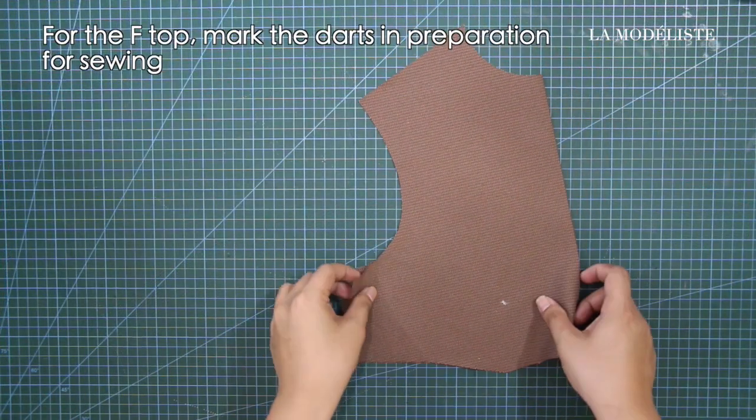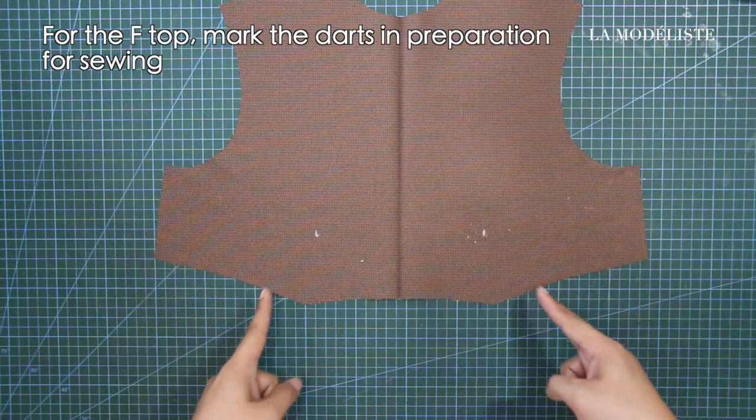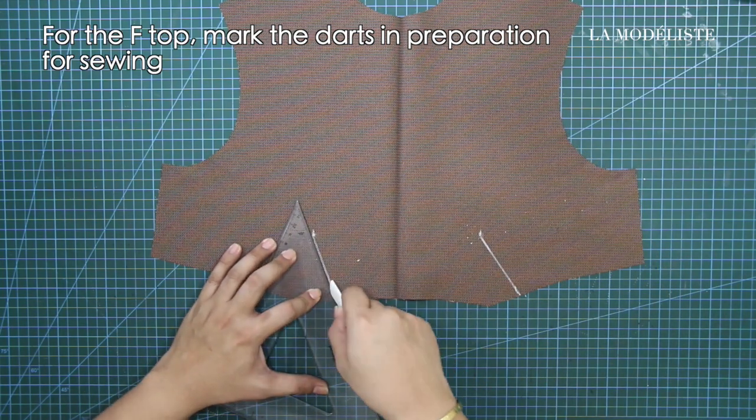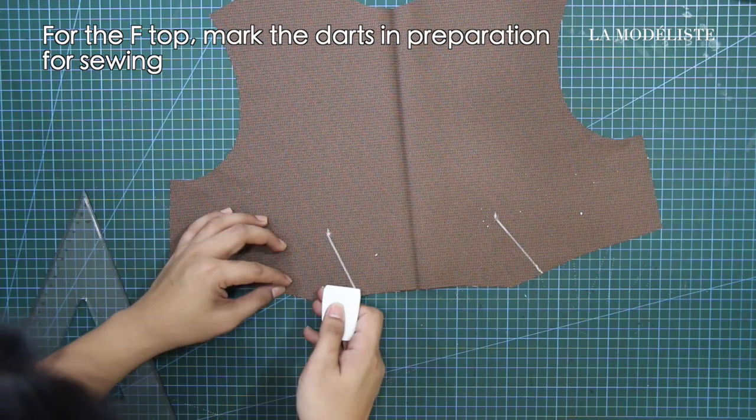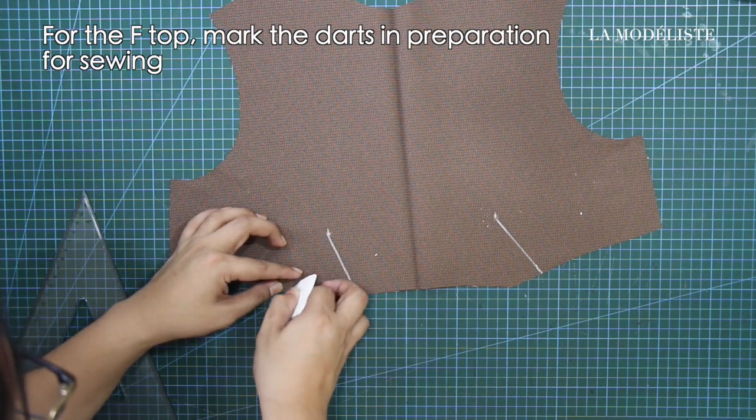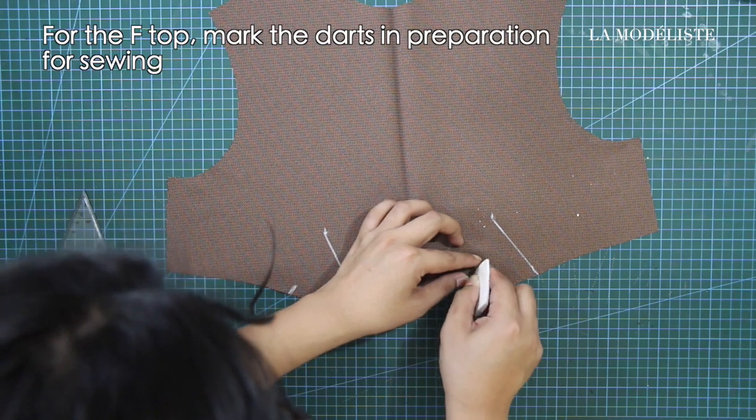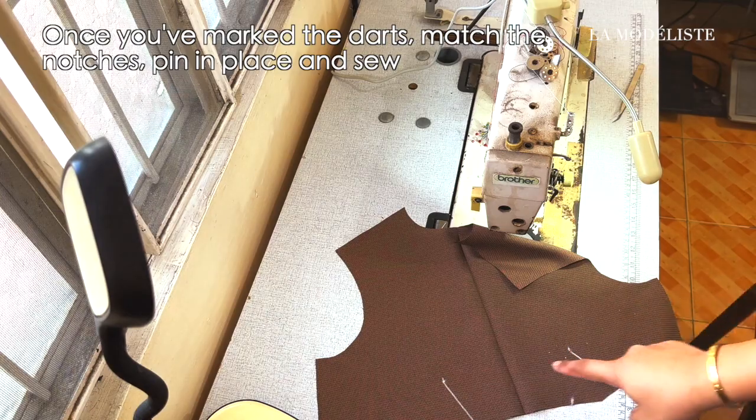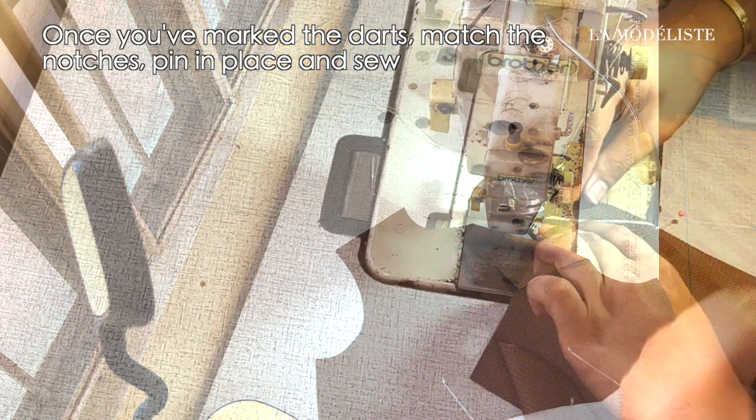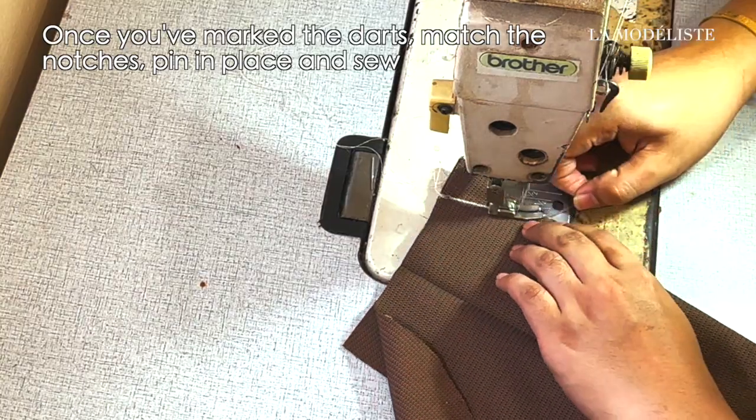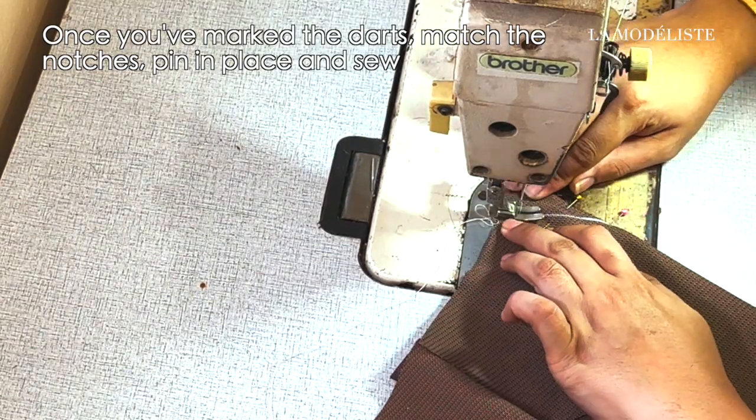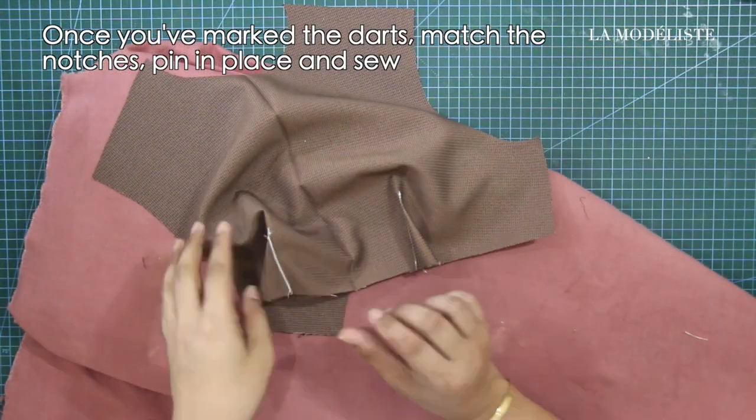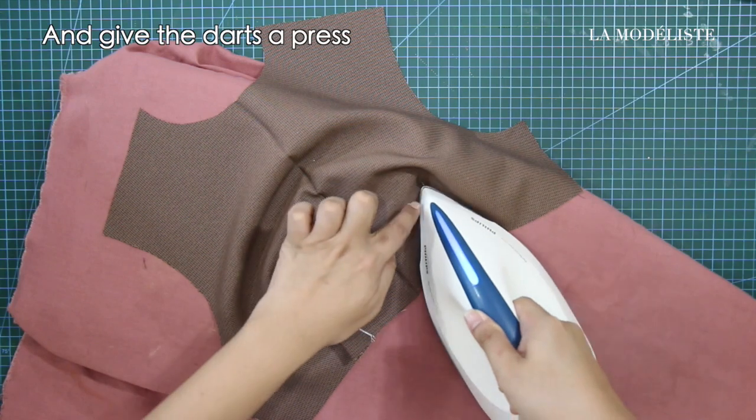For the front top, mark the darts in preparation for sewing. Once you have marked the darts, match the notches, pin in place, and sew. And give the darts a press.